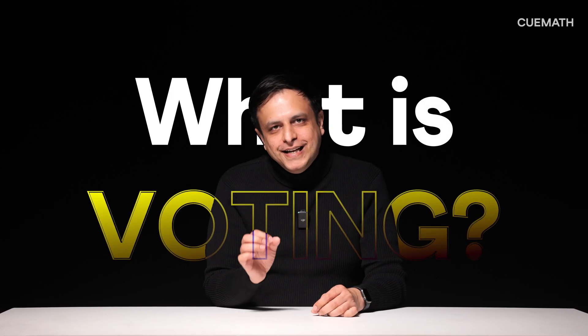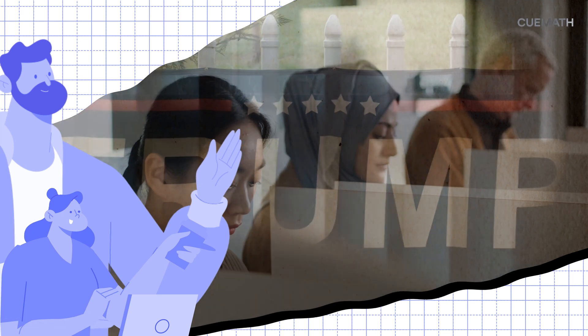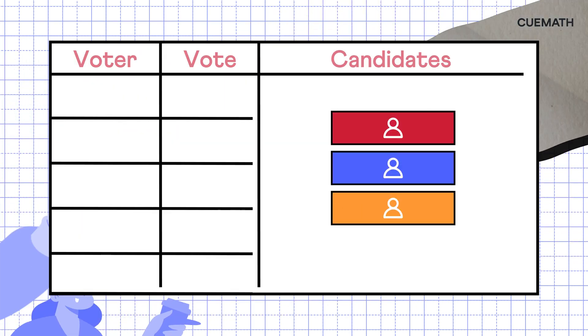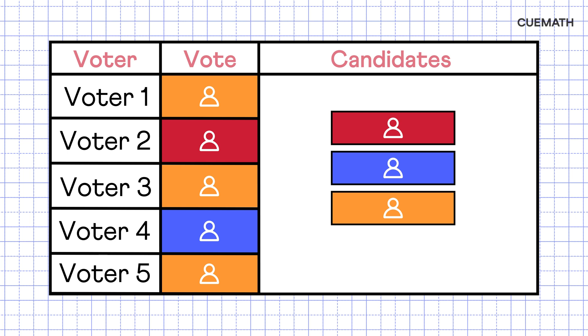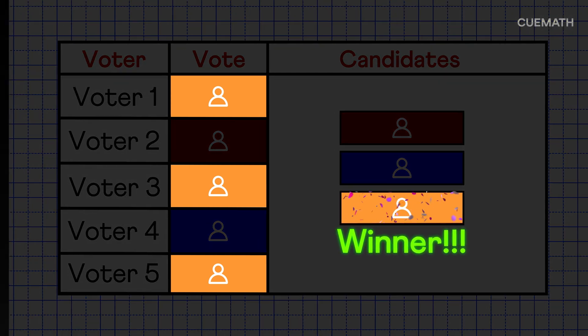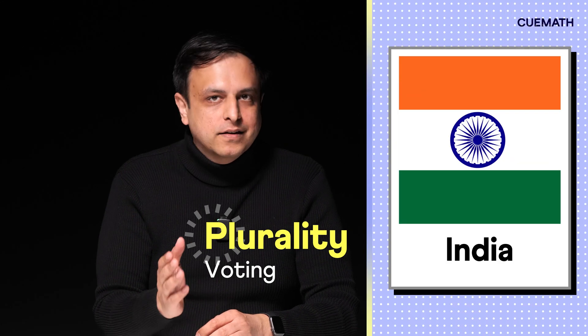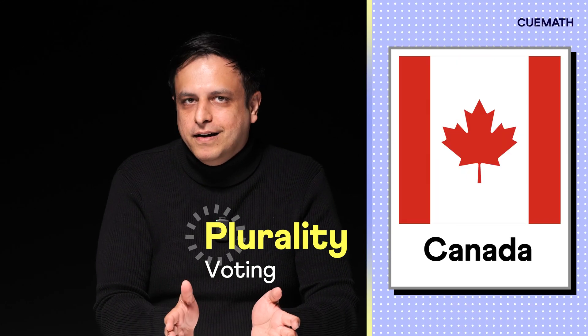What is voting really? It's a way to give everyone a voice in making shared decisions like choosing a leader. Everyone picks their favorite option and the one with the most votes wins. This method, called plurality voting, is widely used in countries like India, the US, the UK, and Canada. It sounds simple but has a flaw.